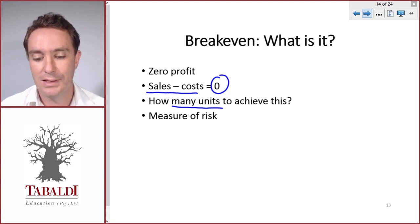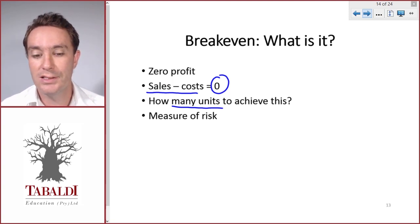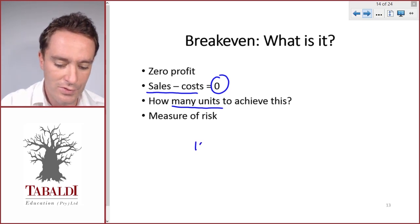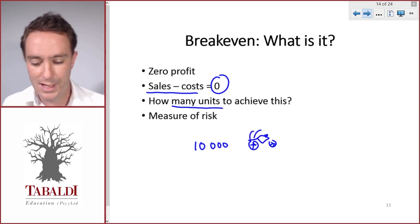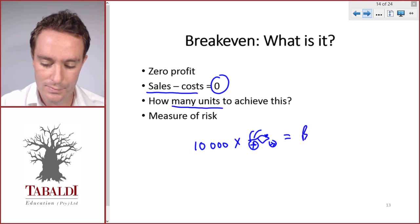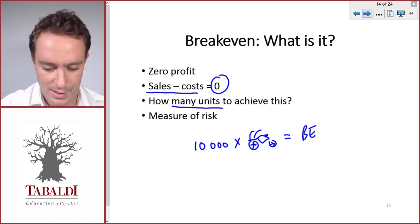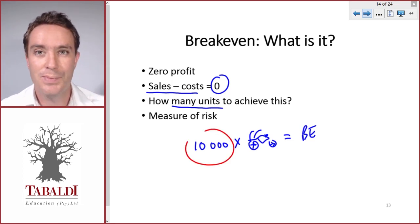Picture a bicycle store — a shop we're going to start. We calculate our break-even and we see that we have to sell 10,000 bicycles in order to break even. So what do we do with this number?